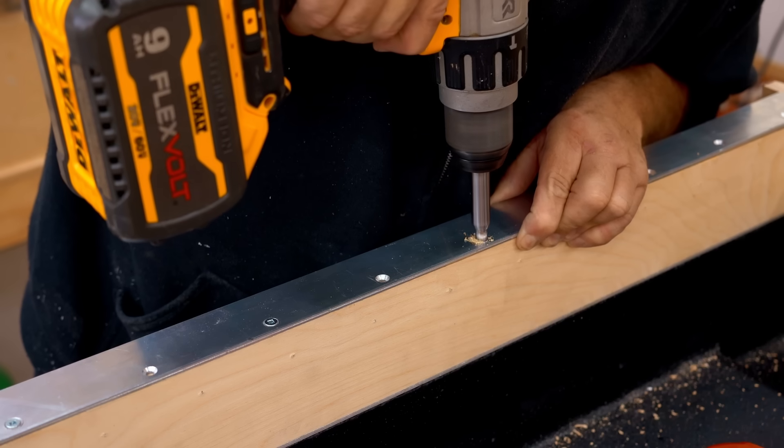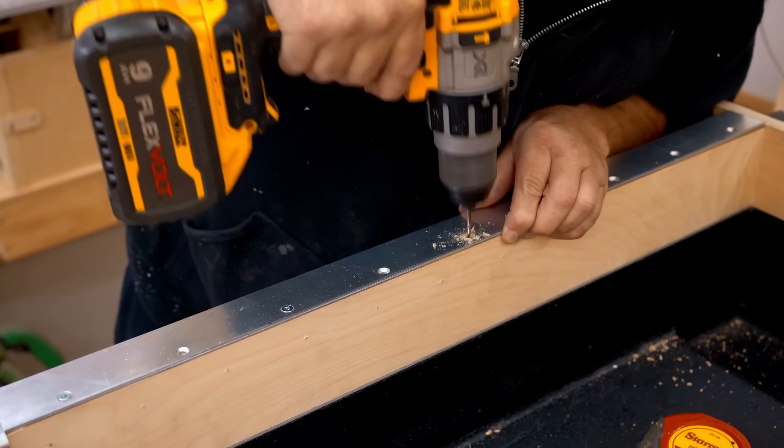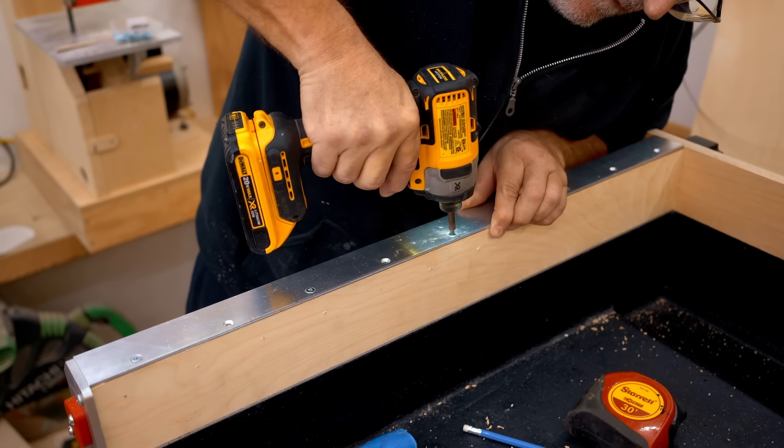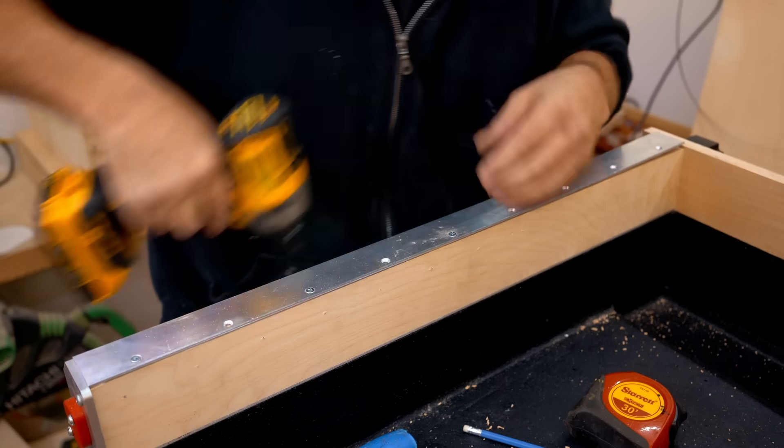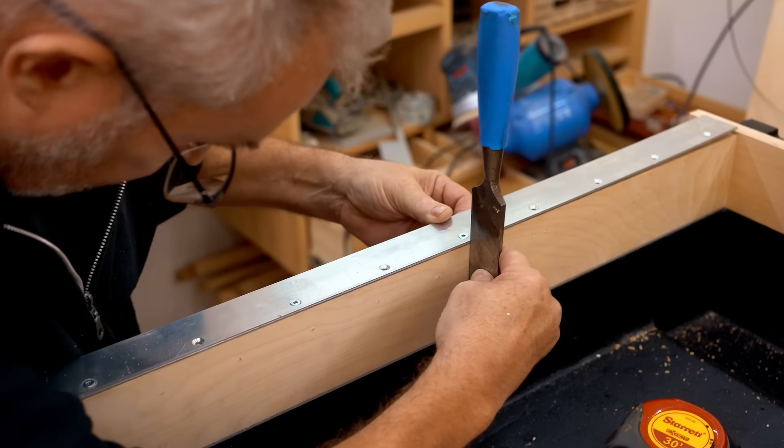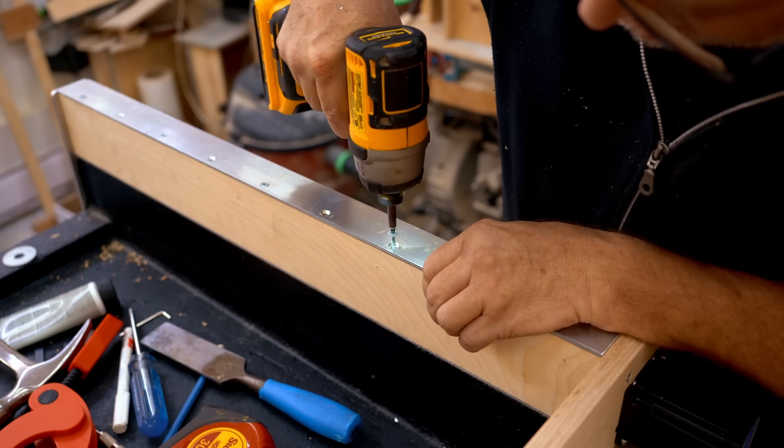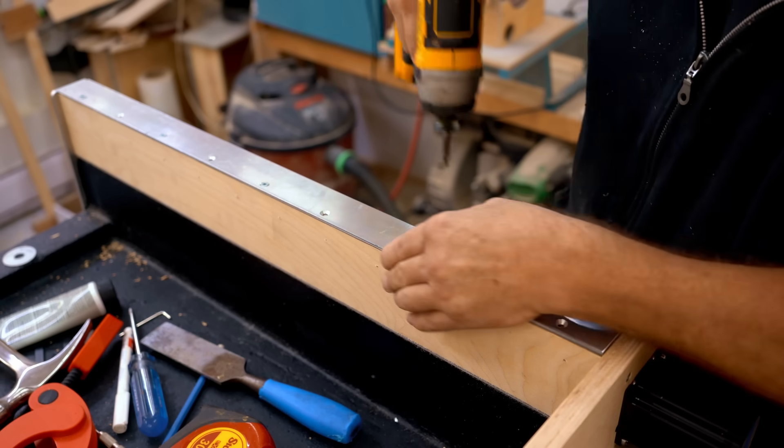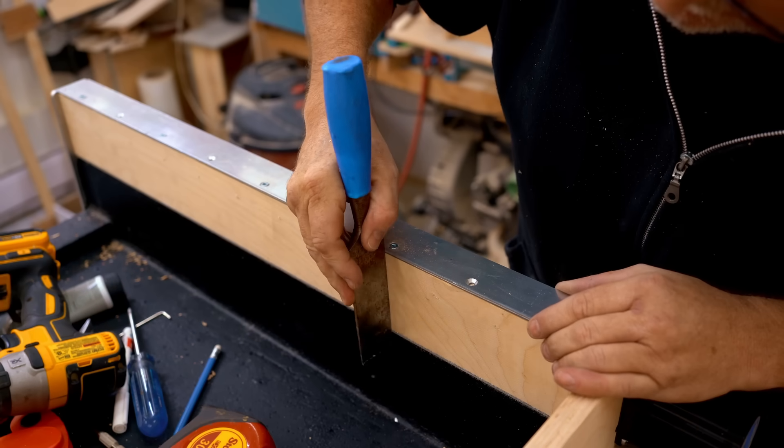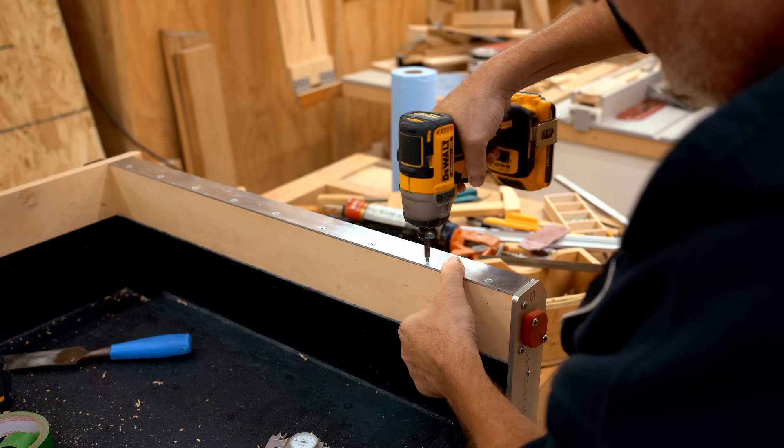Because everything that I'm putting on this machine is adding stiffness and strength, it's very important that everything is lined up properly. I'm checking this as I drive the screws in, using the straight edge of the chisel to check that. Anything handy that's straight is a straight edge. Drive a screw, check to make sure that it lines up, and then move on to the next. I did that on both sides.